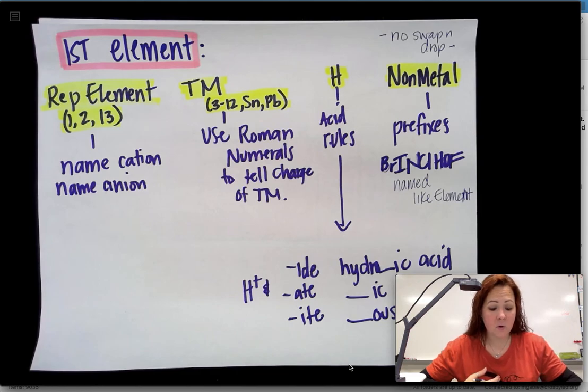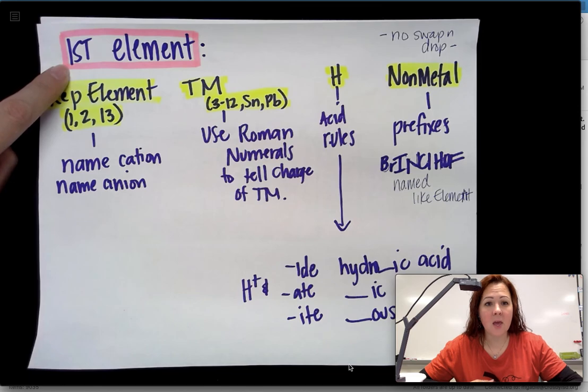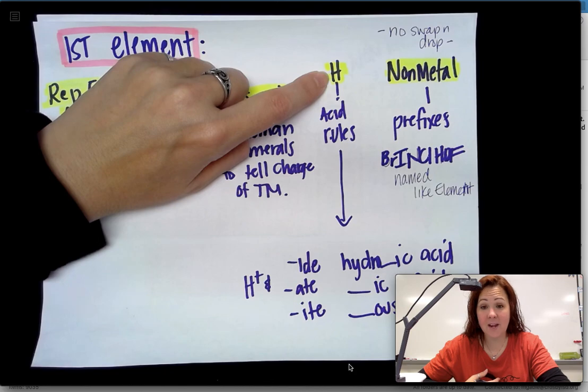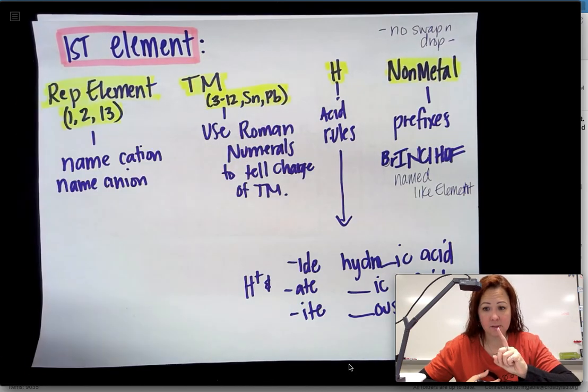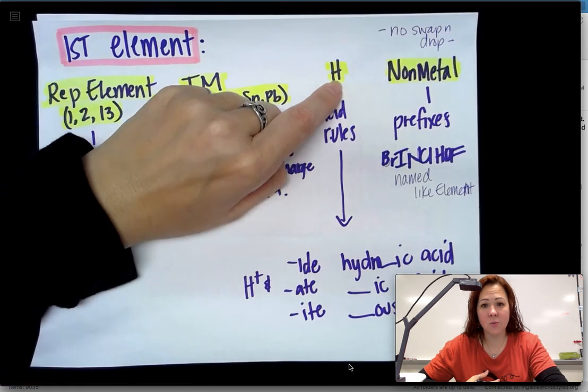When we look at nomenclature, you really have to look at your first element. When you look at your first element, you need to figure out: is it a representative element, which means you have a metal? Or if you have hydrogen in the first place, that means you need to follow your acid rules. And then if you have a nonmetal, which means you have something on the right-hand side of the periodic table over here. When you look at your first element, that's going to determine what rule you need to use to name your compound.